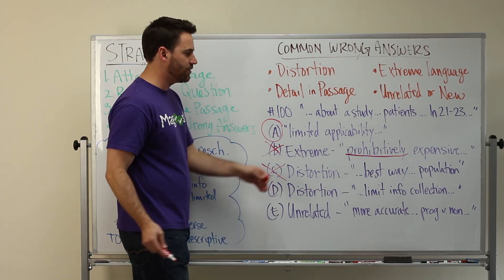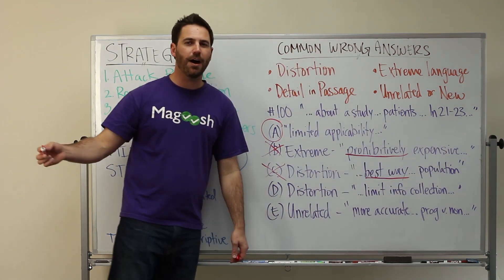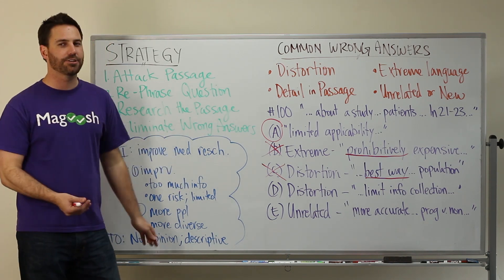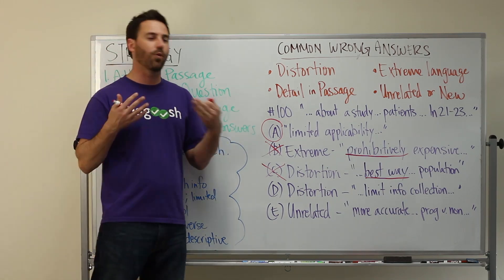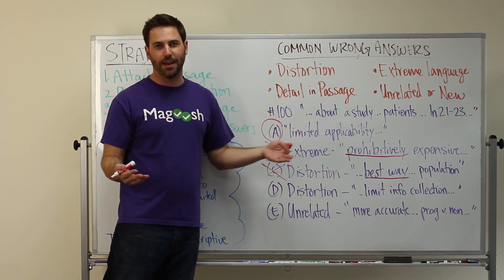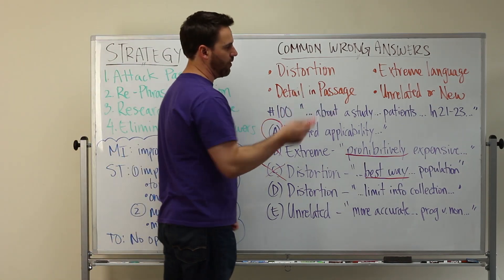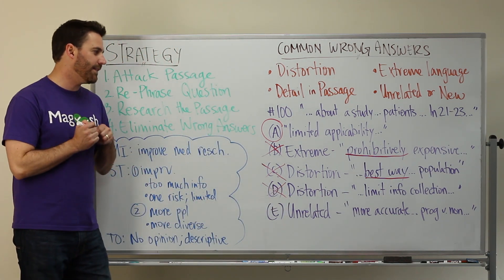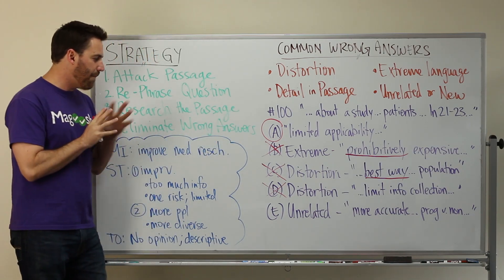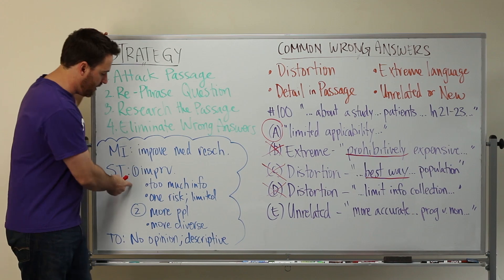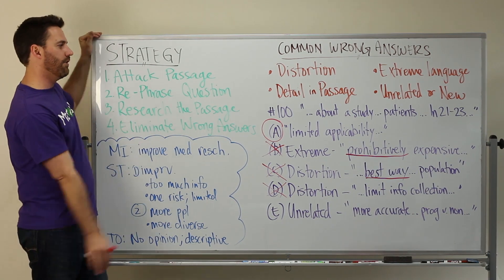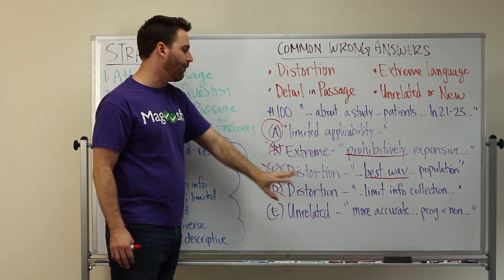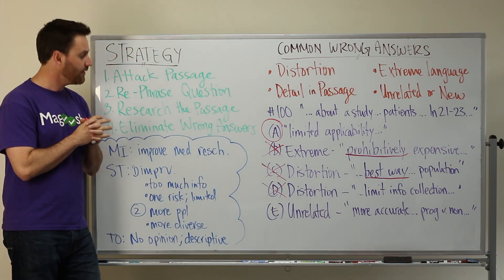C is also wrong — this is a distortion. It says it's the best way to sample the population. We know that it's one way to sample the population, but we don't know if it's the best way. What these researchers are recommending is a different way of enrolling patients, so they feel their recommended approach would be better. It wouldn't make sense to infer that what we have now is the best way, so we eliminate C. D is also a distortion — it says it would limit the information we could collect. The passage does talk about collecting information, but it's up in paragraph one and doesn't quite relate to what we're focusing on in this question. They're pulling information from a place in the passage not relevant to this question, so we eliminate it.